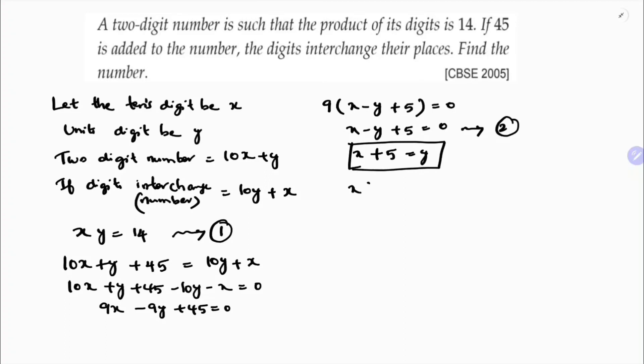So x into x plus 5 equals 14. x squared plus 5x minus 14 equals 0. 14 factors are 7 into 2. So x squared plus 7x minus 2x minus 14. X if I take common, x plus 7. Minus 2 if I take common, x plus 7.